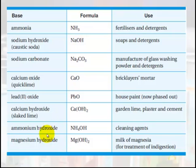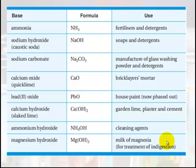Magnesium hydroxide is often found in indigestion products like Eno's or Rennies, because what they do is balance out or neutralize too much acid in your stomach.